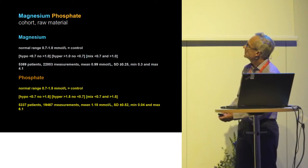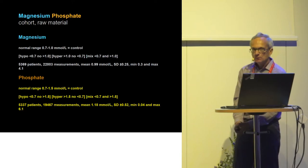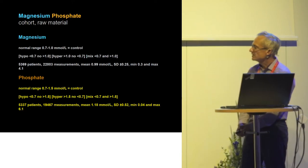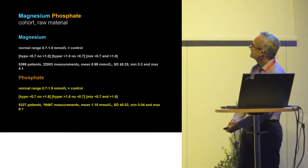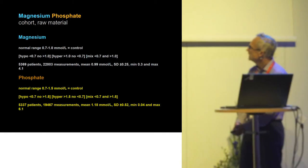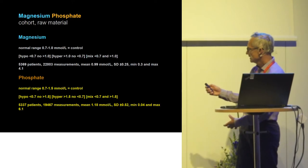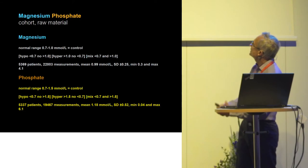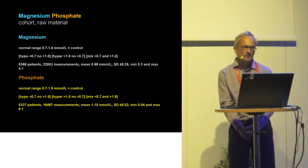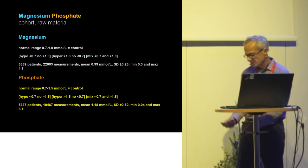The normal range for magnesium in my material is 0.7 to 1.0, and for phosphate 0.7 to 1.5. We see that the mean value of magnesium is 0.99 and the mean value of phosphate is 1.18. We also see that the standard deviation in magnesium is much narrower, so magnesium is more tightly controlled in the body compared to phosphate.